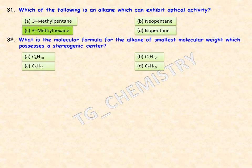What is the molecular formula for the alkane of smallest molecular weight that possesses a stereogenic center? The correct option is option D — C₇H₁₆ — as it is the smallest alkane molecular structure having a stereogenic center.